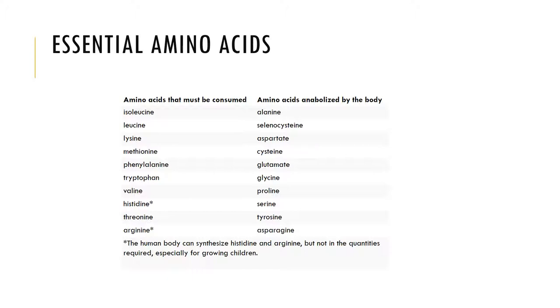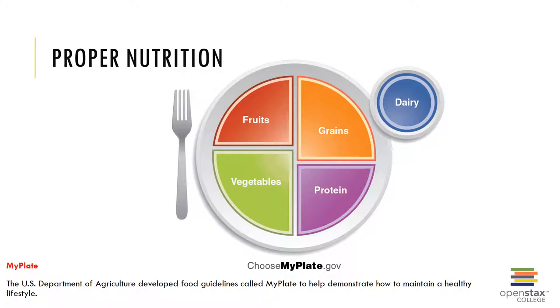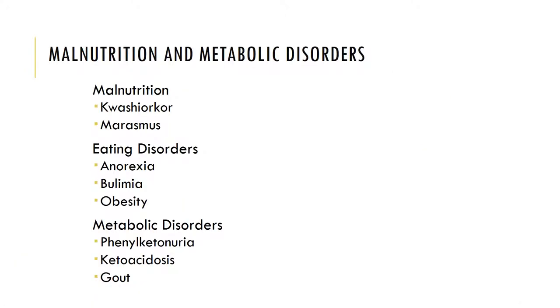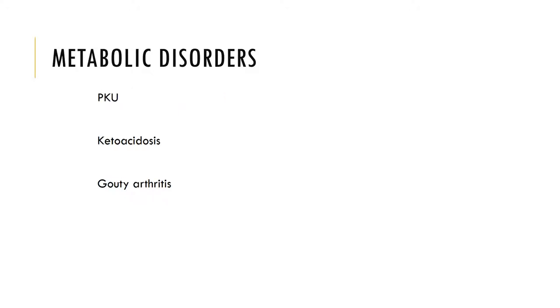The essential amino acids that must be consumed are listed here, and the essential amino acids that are anabolized by the body are also listed here. Proper nutrition is important to the functioning of a normal healthy body. The MyPlate website, provided by the U.S. Department of Agriculture, has guidelines on how you can maintain a healthy diet. Make sure you're familiar with the three eating disorders and the metabolic disorders that we discussed.